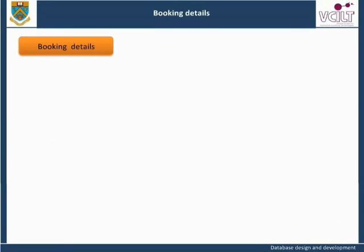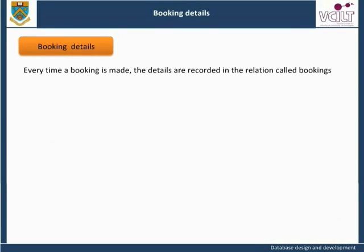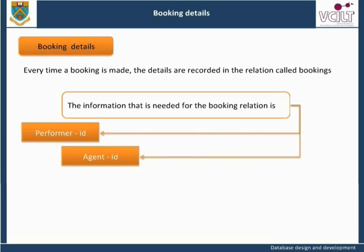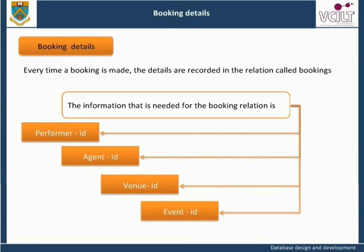Booking Details: Every time a booking is made, the details are recorded in the relation called bookings. There is no need to store all the details of the performer, agent, venue, and event for each booking that is made, as this information can be acquired from the relevant relation for performers, agents, venues, and events. The information needed for the booking relation is performer ID, agent ID, venue ID, and event ID. These four attributes together form the key for this relation, along with the booking date.